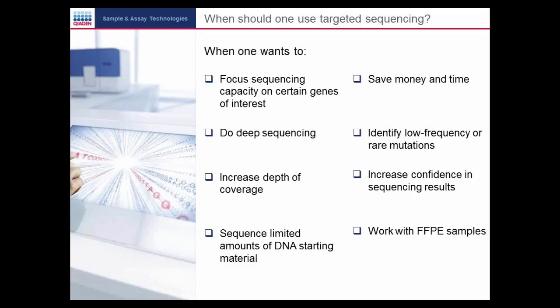Fourth, sequence limited amounts of DNA starting material, such as from FFPE samples. FFPE samples usually yield very limited amounts of DNA and low-quality DNA, which limits their capability to be sequenced. Targeted sequencing, due to its lower requirement for DNA material, makes sequencing FFPE samples a possibility.